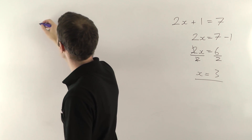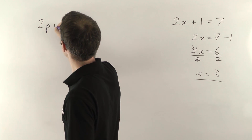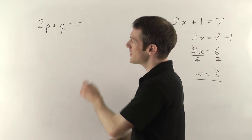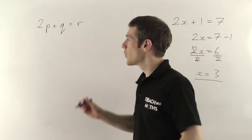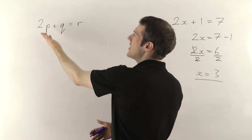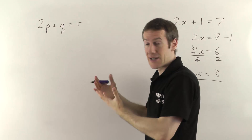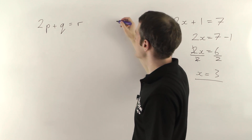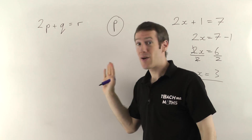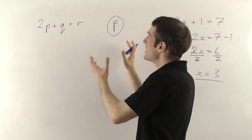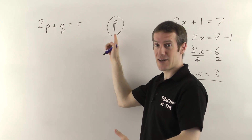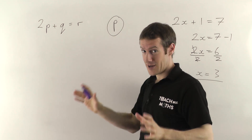So if we have 2p plus q equals r — for transposition you'll always be told which letter you want by itself. They'll usually say 'transpose for a particular letter.' In this case the letter we want by itself is p. I always write it at the top right and put it in a circle so I don't forget which letter it is — it can be easy to lose track with all the different letters moving around.